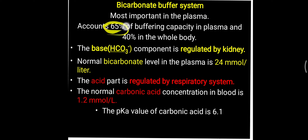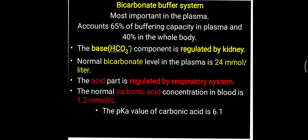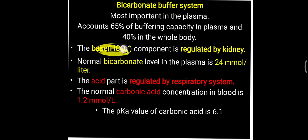The bicarbonate buffer system accounts for 65% of the total buffering capacity in the plasma and 40% of the total body. So out of the total body, bicarbonate is nearly half of the total buffer system. pH regulation uses the Henderson-Hasselbalch equation: pH = pKa + log(base/acid). In this buffer system, the base part is the bicarbonate ion.